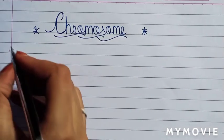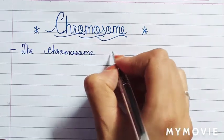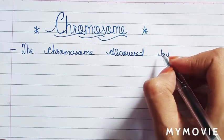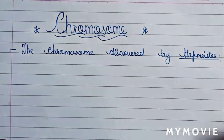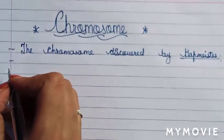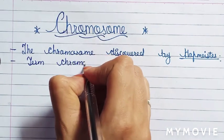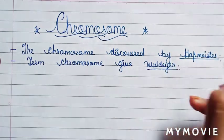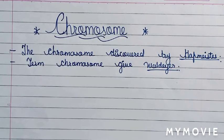The chromosome was first discovered or observed by Hofmeister. Many scientists discovered the chromosome, and the term 'chromosome' was given by Waldeyer. So to summarize: discovered by Hofmeister, and the term given by Waldeyer.